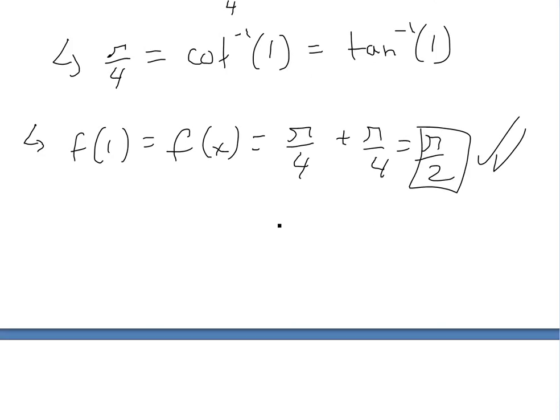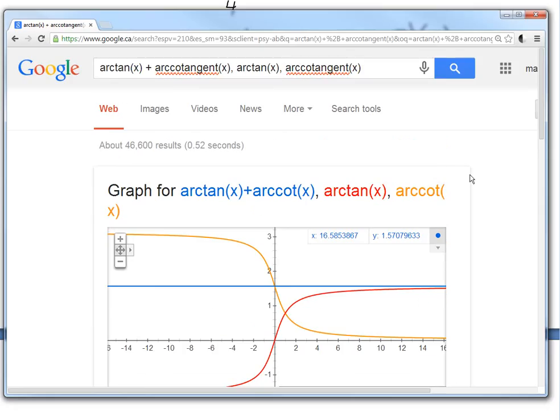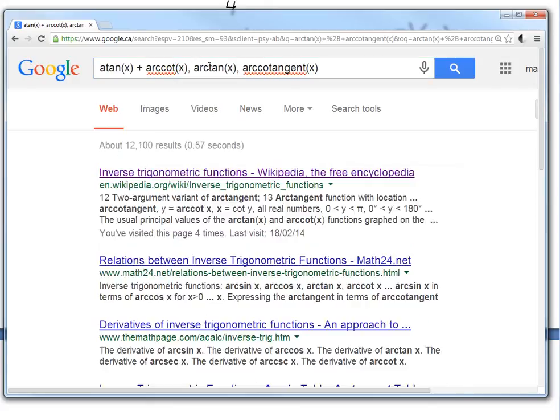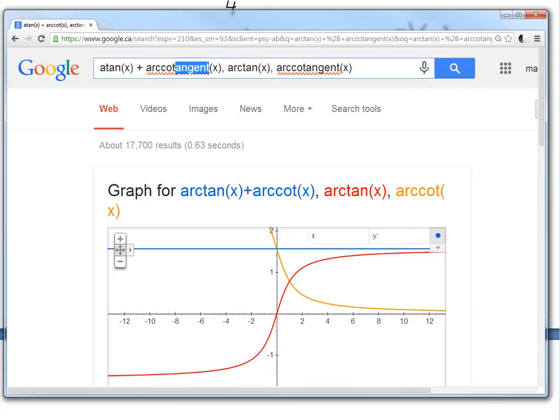If you're using a graphing calculator like I have here, just a quick note: you could write arctan or atan—this should work and it automatically puts arctan. But with arccot, for some reason you can't write arccot; you have to write the full cotangent inside there.